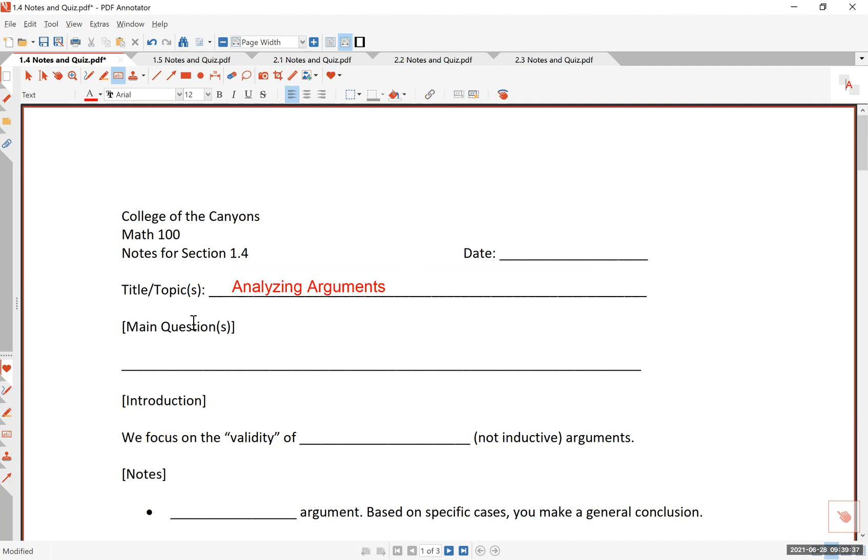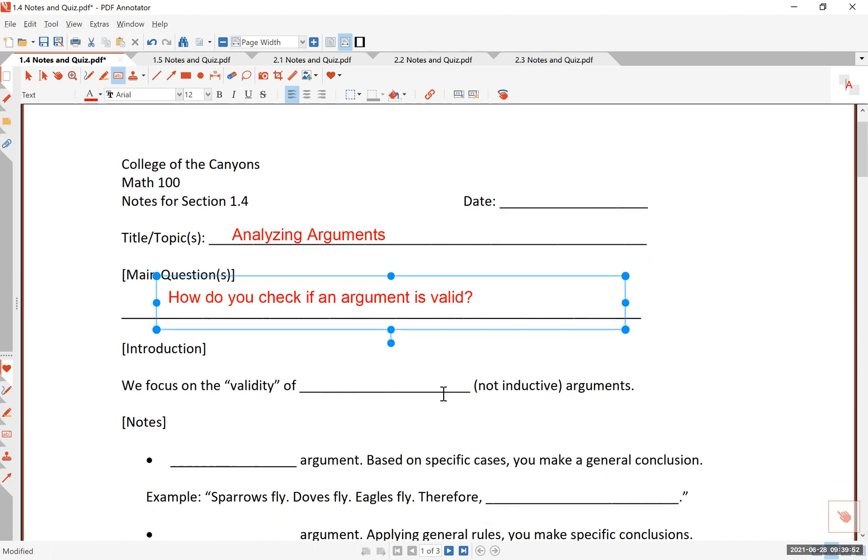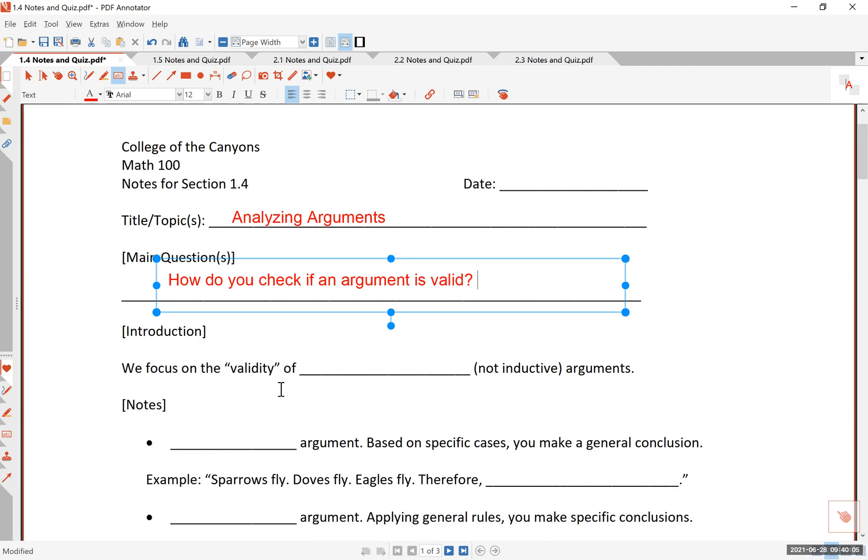The main question we'll be answering is this: How do you check if an argument is valid? Now, I am not saying if the argument is correct or true. That is actually a separate issue. The question of validity has to do with the structure, the logical structure of a certain kind of argument. And so when I say a certain kind of argument, I have to make that distinction between deductive and inductive argument. Let's start there.